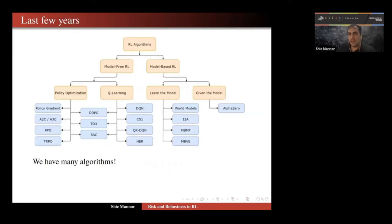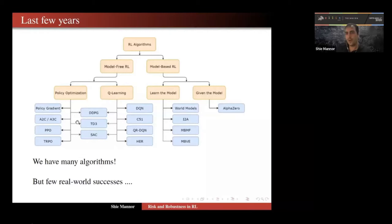There is a sort of a brief ontology of RL algorithms. We have model-free RL and model-based RL. In model-based, we try to either learn the model or assume it's given. In model-free, we try to optimize the policy or optimize the Q function, which gives us a policy. There are lots of algorithms, each deserving a talk on its own. However, we only have very few real-world successes — whenever there is one, the whole community touts it, but it happens only once every three or four months. The question is really why, and in this talk I'm going to try to give you an answer and how this could be remedied.